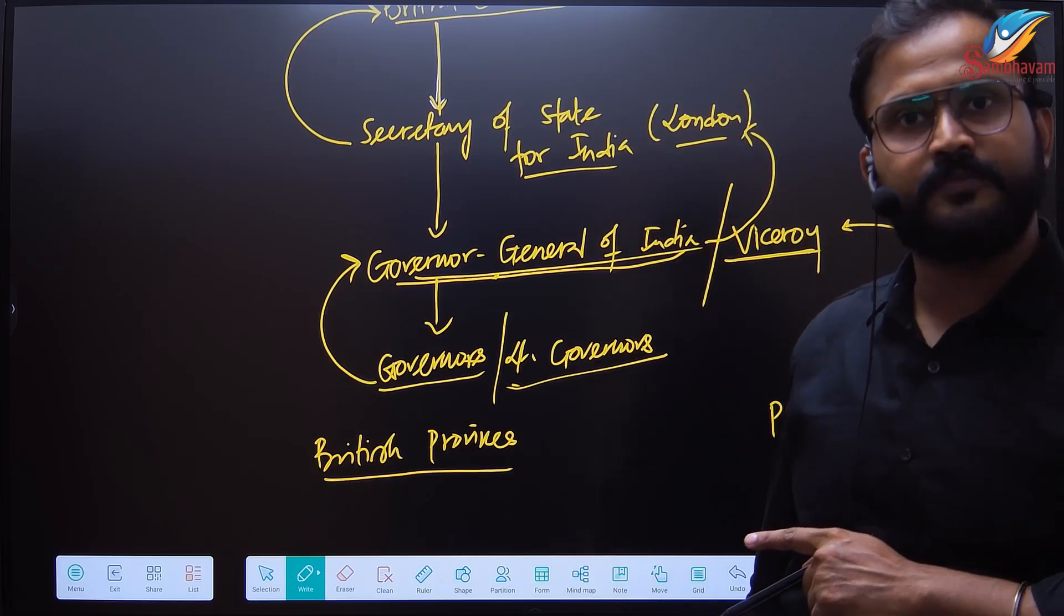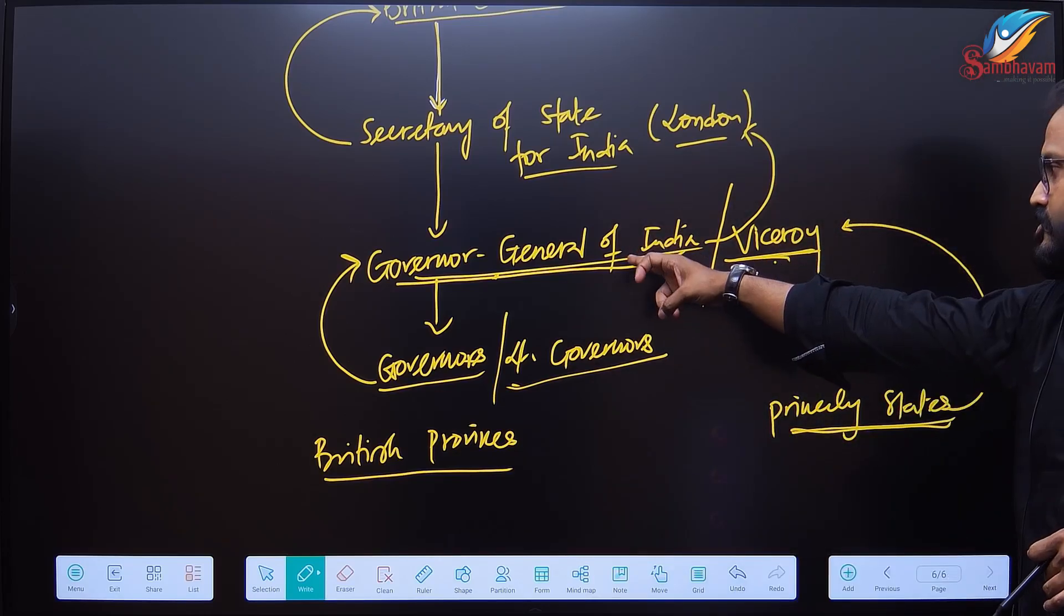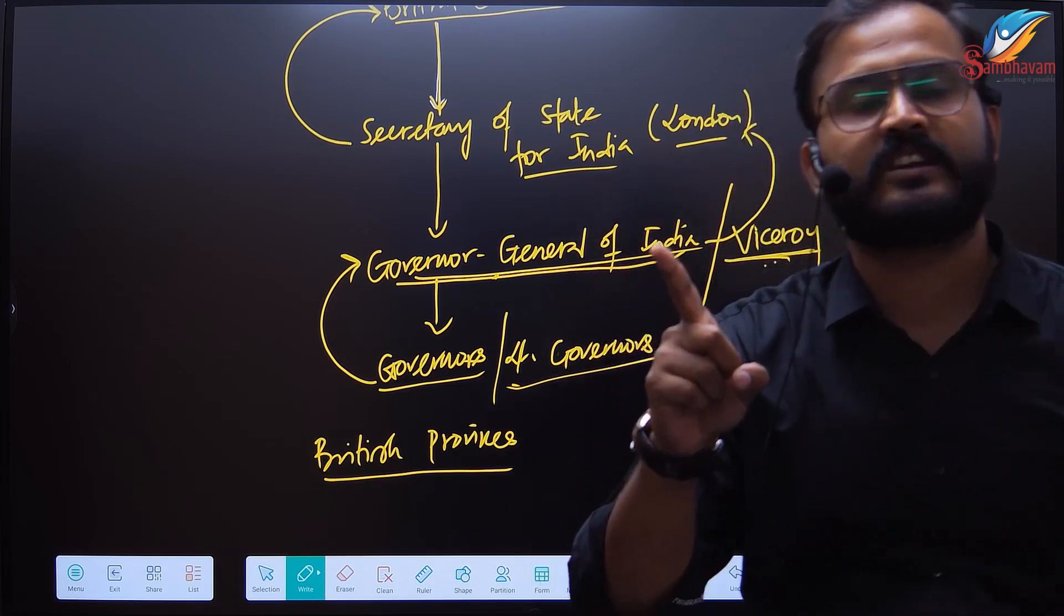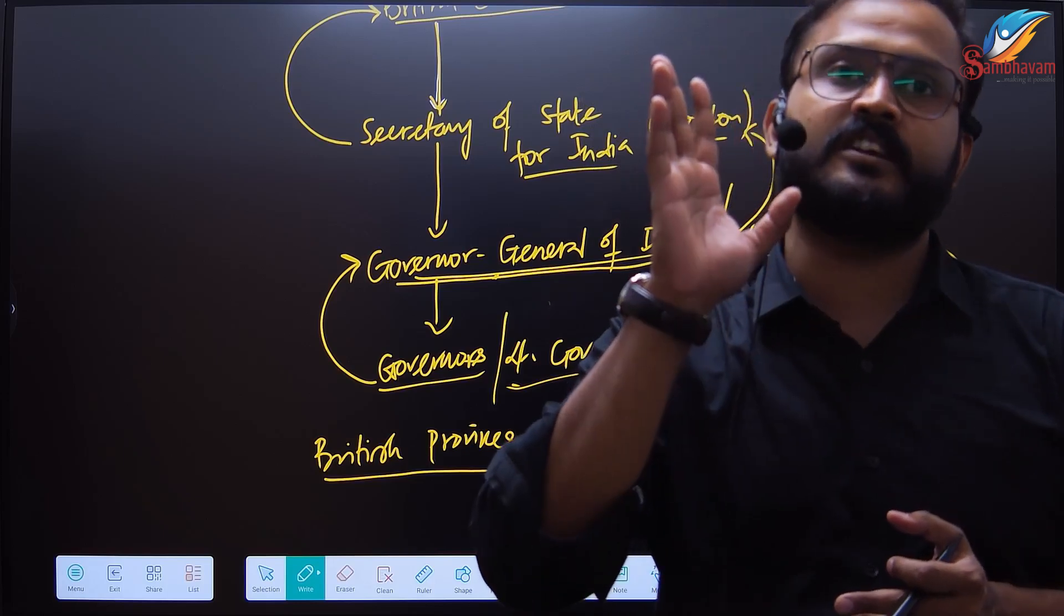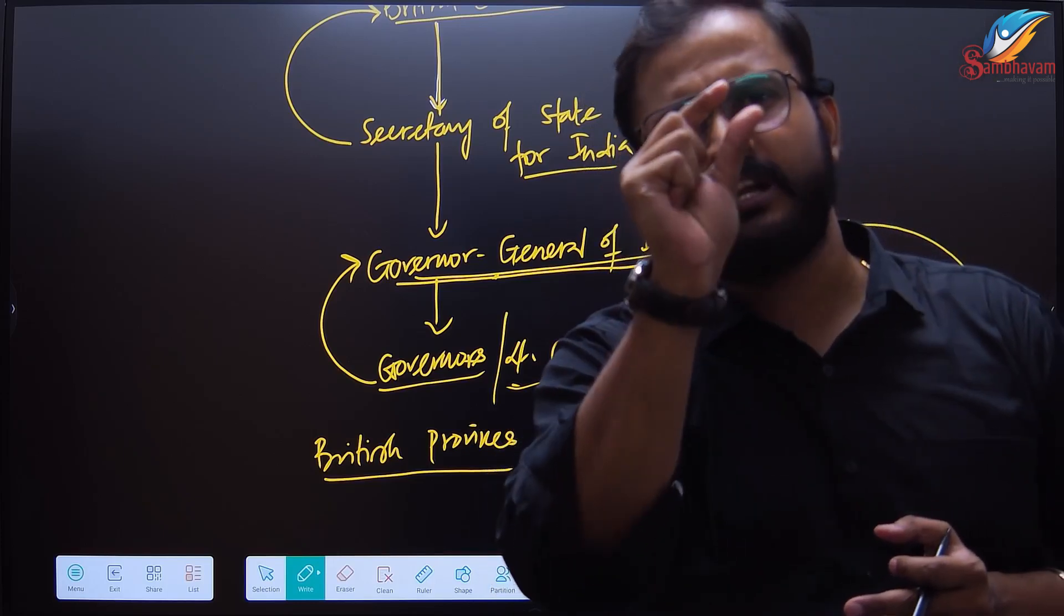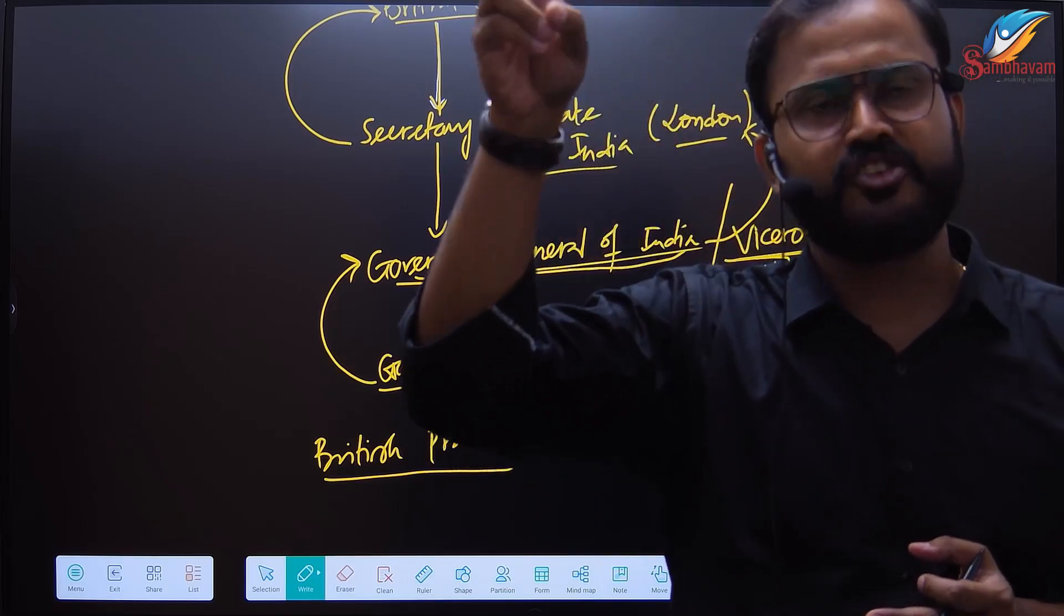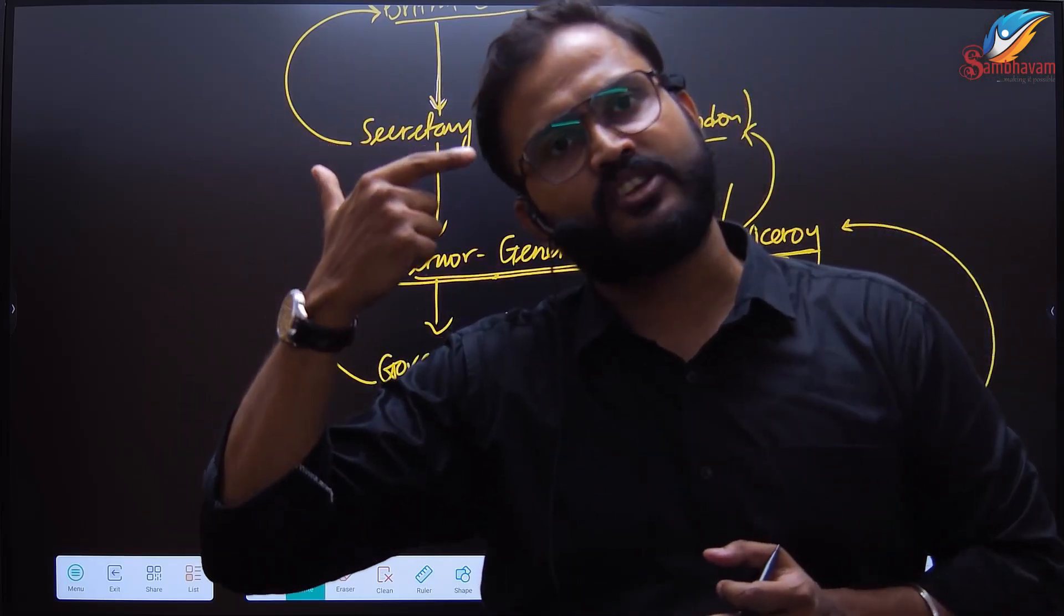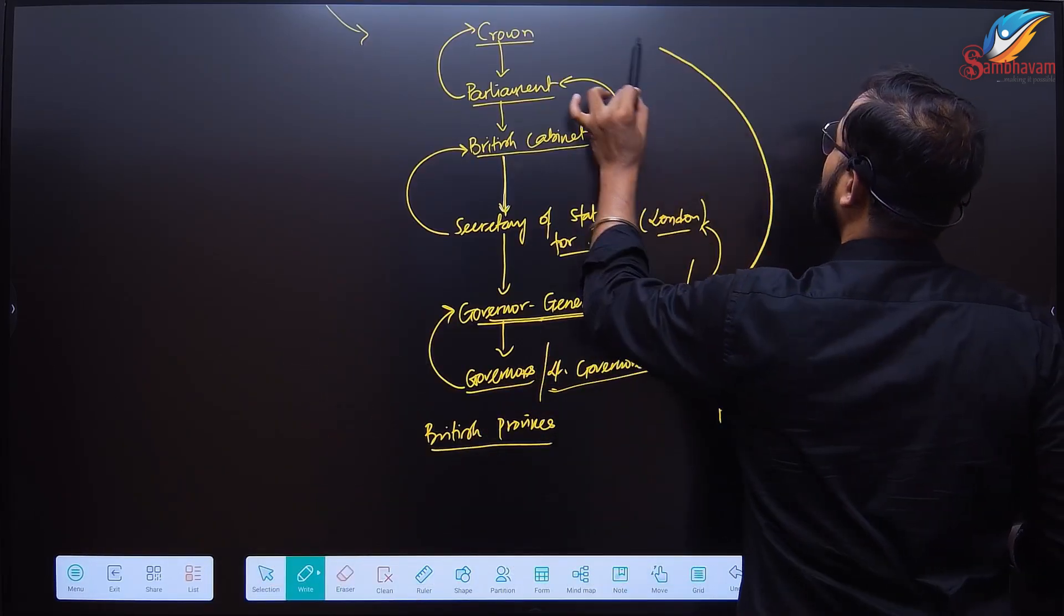This position was created to communicate directly with the princely states. That means they were sovereign authorities. Viceroy is a position created. Governor General of India will be holding another position, that is Viceroy. Princely states do not have to follow the chain of hierarchy. Also, the princely states are to give away only limited rights, for example external communication, war, external relationships. Certain areas they have to give up, or else in other issues they will enjoy sovereignty.